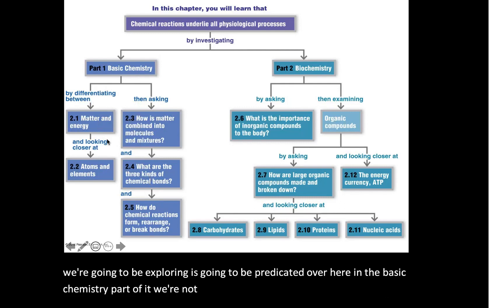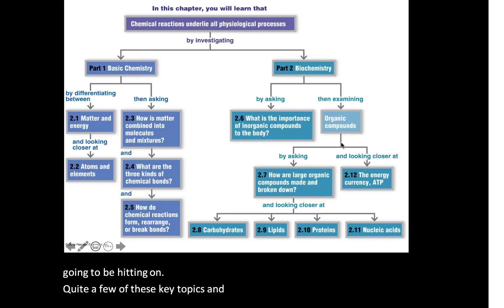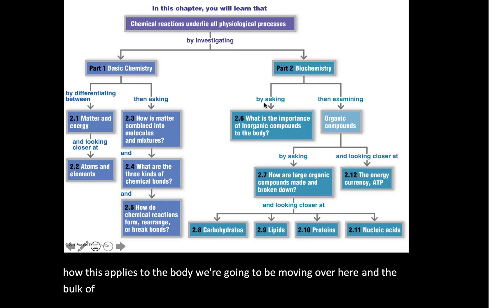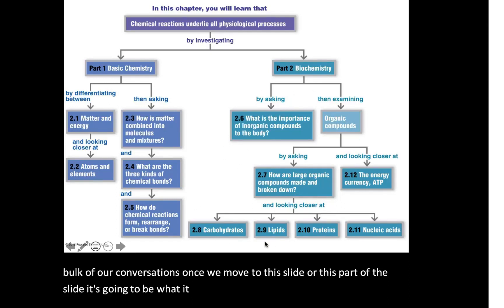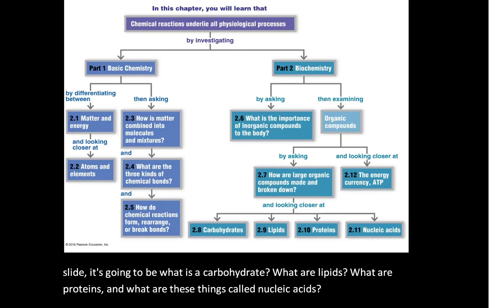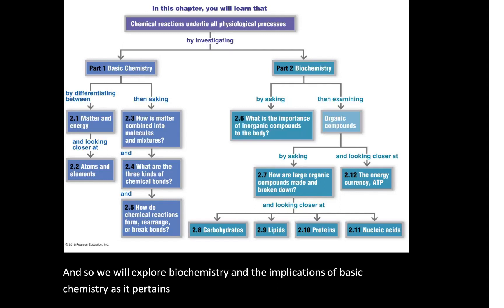We're not going to go through all of these topics, but we're going to be hitting on quite a few key topics. Once we start transitioning into how this applies to the body, the bulk of our conversations will focus on: what is a carbohydrate? What are lipids? What are proteins? And what are these things called nucleic acids? We will explore biochemistry and the implications of basic chemistry as it pertains to carbohydrates, nucleic acids, proteins, and lipids.